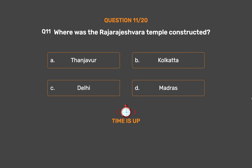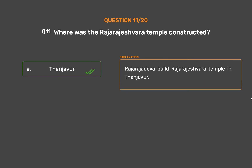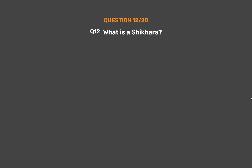The correct answer is Option A: Tanjavur. Raja Rajadeva built the Raj Rajeshwara temple in Tanjavur.